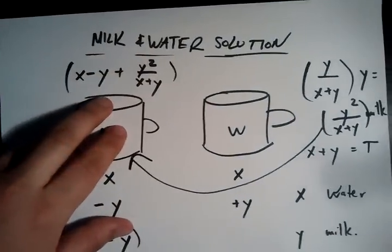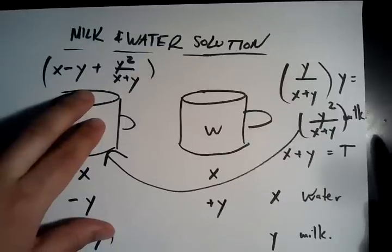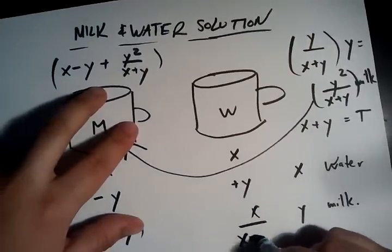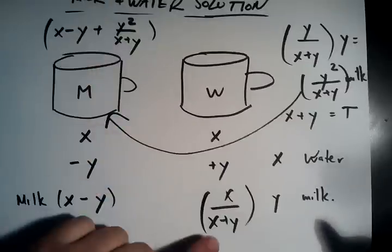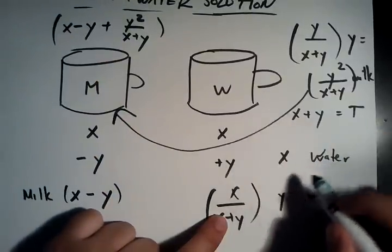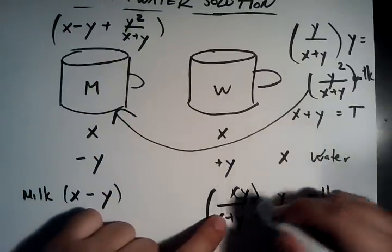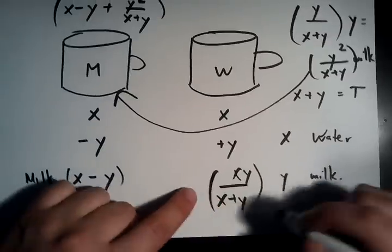And the total amount of water. So the water is given by x over x plus y. That's the proportion. And multiplying that by the spoonful, which is y, we get xy over x plus y water.